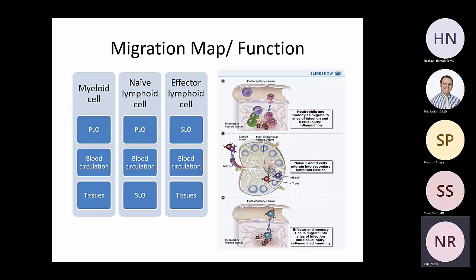A naive lymphocyte goes from the primary lymphoid organ to the circulation and then to a secondary lymphoid organ, but a naive lymphocyte typically does not go into the tissues. It stays in the secondary lymphoid organ until it is activated. Once activated and differentiated into an effector lymphocyte, it moves from that secondary lymphoid organ to circulation and then into the tissues — very methodical depending on the type or phase of the cell.